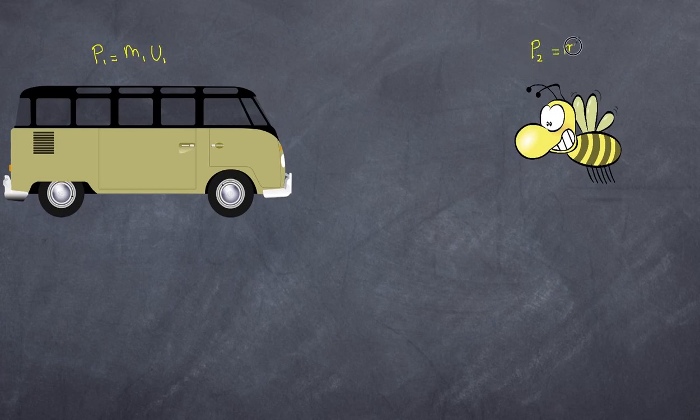Similarly speaking, my bee, so I'm going to call this 2, is equal to its mass multiplied by its velocity. Now I know that in this case our combi van is going in the opposite direction of the bee, but remember our m's and the u's, particularly our u's, are just variables and they can be positive or negative.